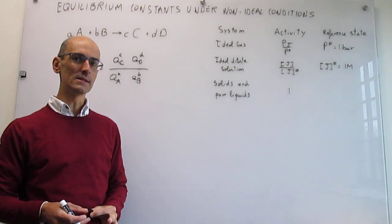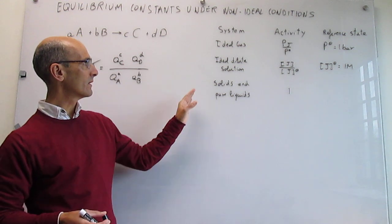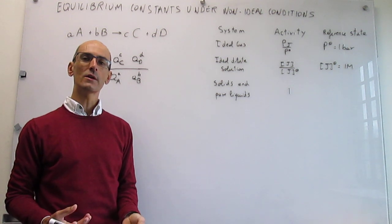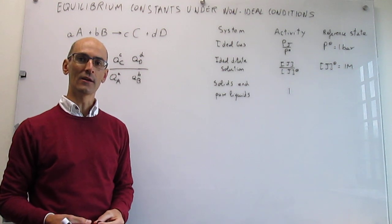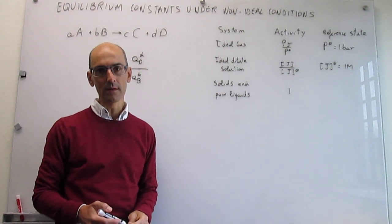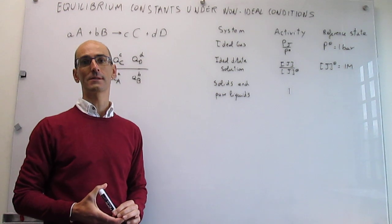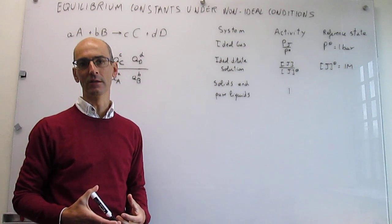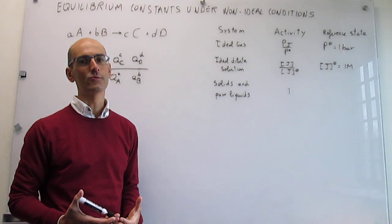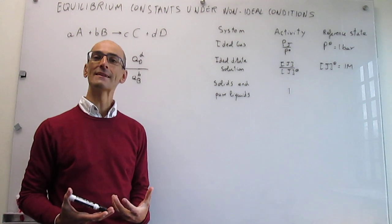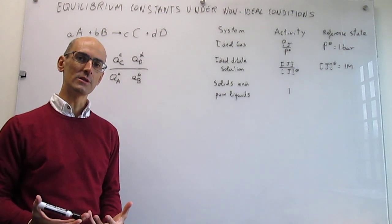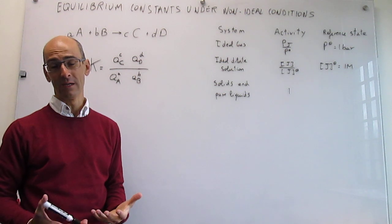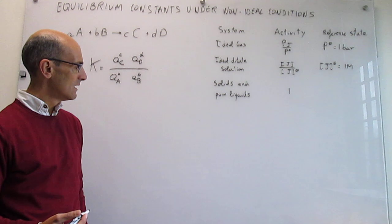The limitation of this approach is that we are bound to situations of ideality — an ideal gas or an ideal dilute solution where concentrations must be low. The question is: what happens when you don't have ideal conditions? For a solution, the problem might be that solute concentrations are large enough that you're no longer following Henry's law, and you no longer have ideal dilute solution behavior. To treat that, we need to involve activity coefficients.